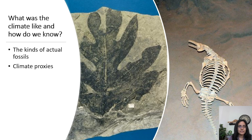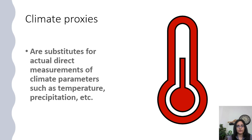We can also use something called climate proxies. These are tools that paleoclimatologists like myself use to get a better understanding of past climate. Because we can't go to the Cretaceous period and take a thermometer or set out a rain gauge, we use substitutes for those measurements — and that's what climate proxies are: substitutes for the actual measurements we can make today but obviously cannot make 100 million years ago.